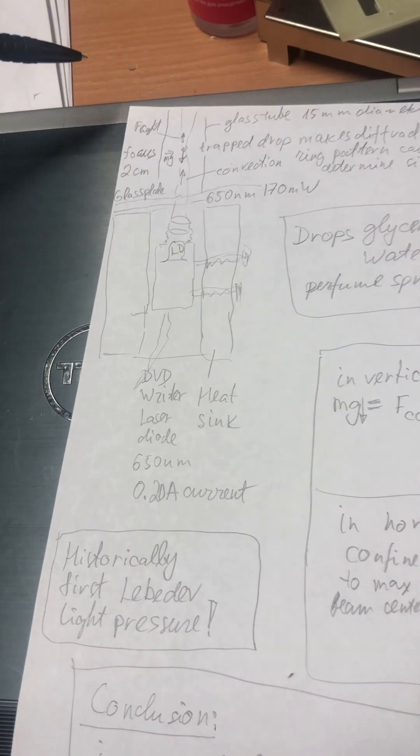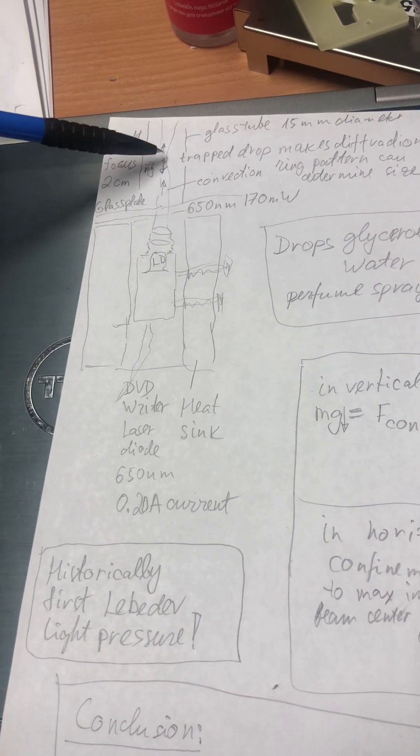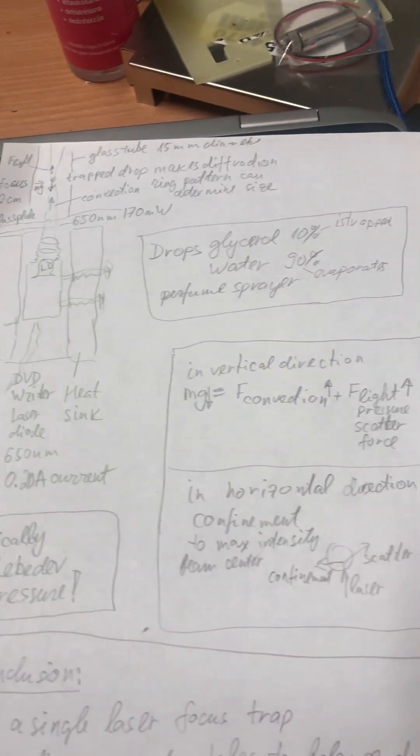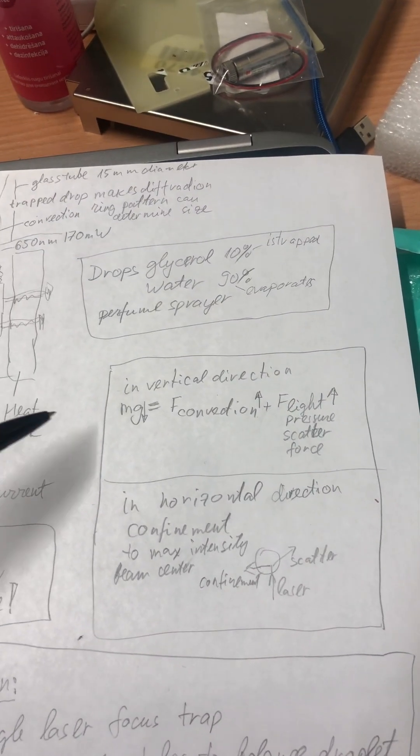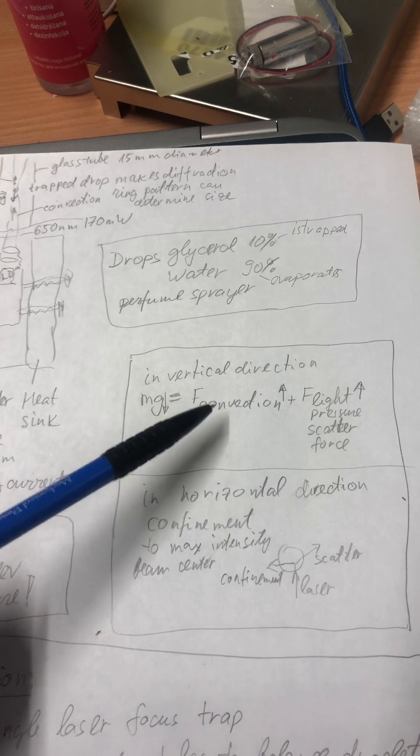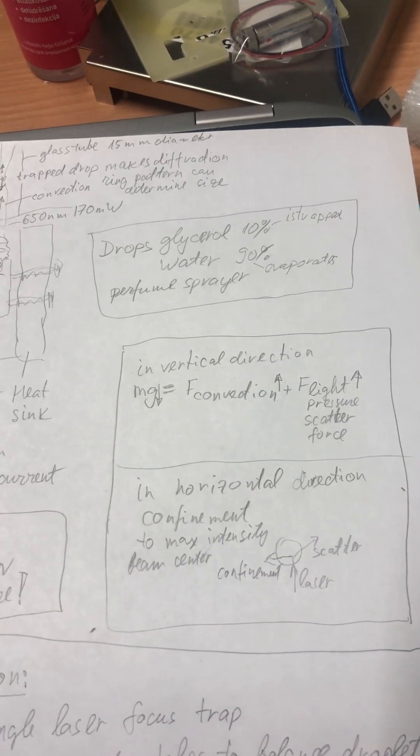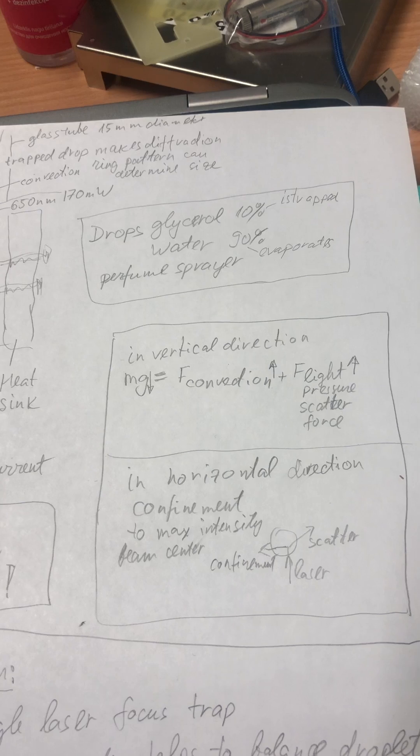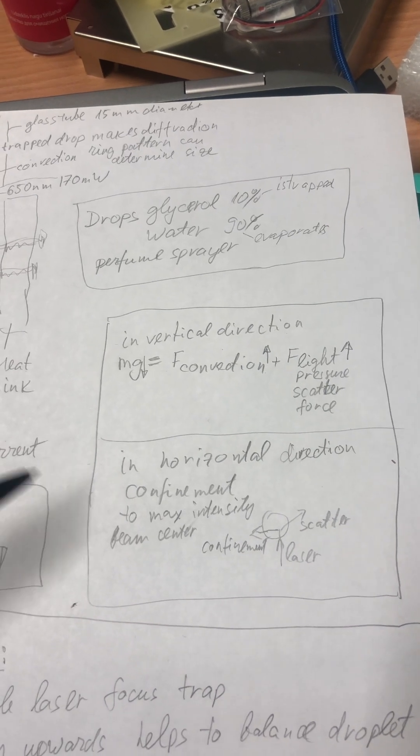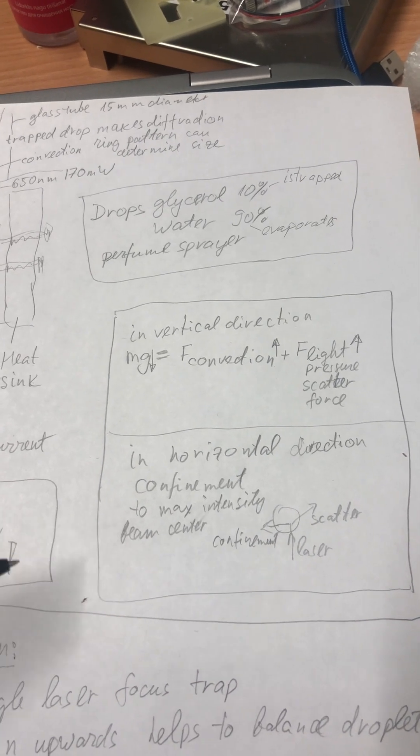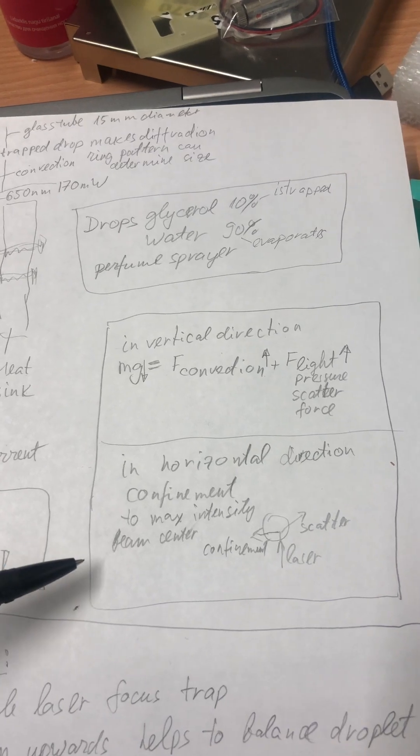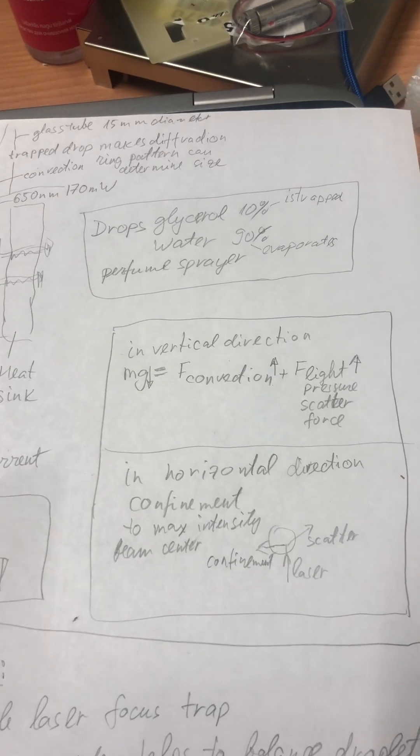During trapping there is interplay of gravity and upwards convection force and light pressure scatter force in the vertical direction, and in the horizontal direction it is confinement by scattering force.